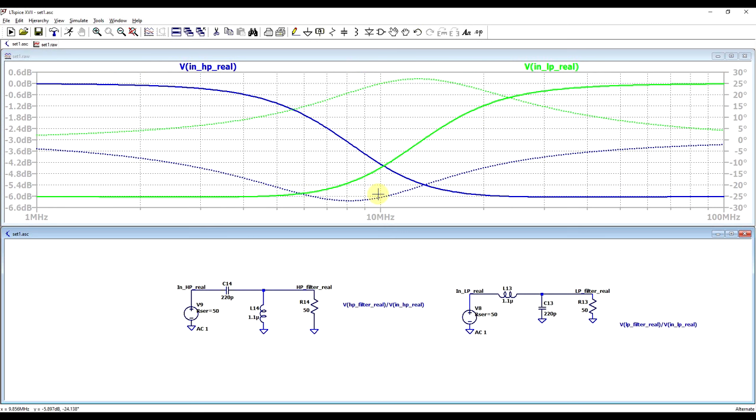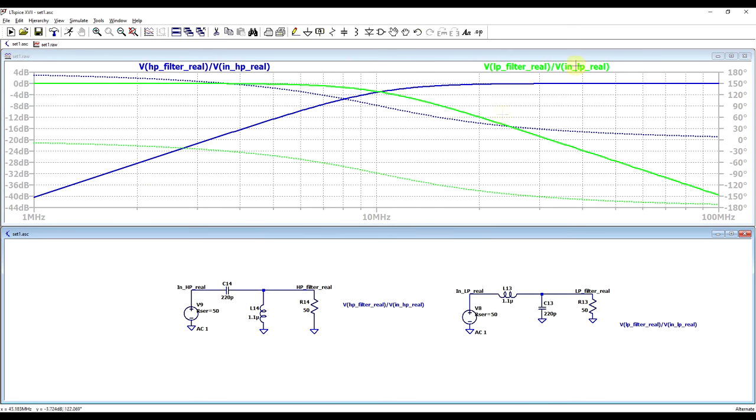However, we can still confirm that the filter is adding the 90 degrees of phase shift by plotting the ratio of input to output signal. So if we do this, then we get the same result as before. At the corner frequency of about 10.2 megahertz, both circuits have the same amplitude and the 180 degrees of phase shift.